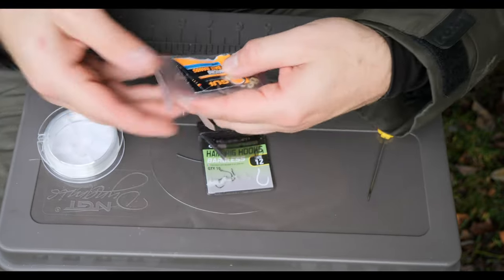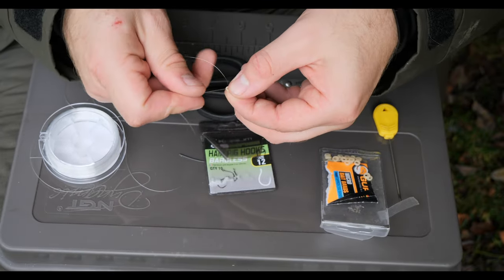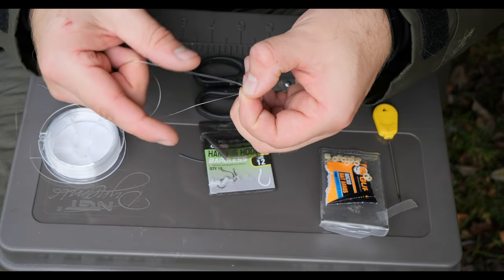Then we want to get one of our bait bands and we want to thread our hook link through the bait band and leave yourself a decent tag end of a couple of inches.